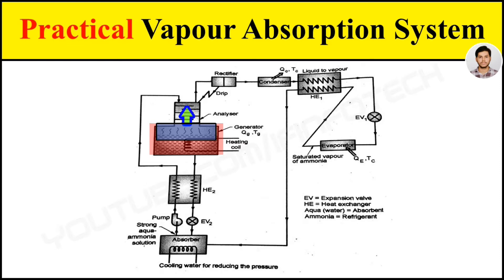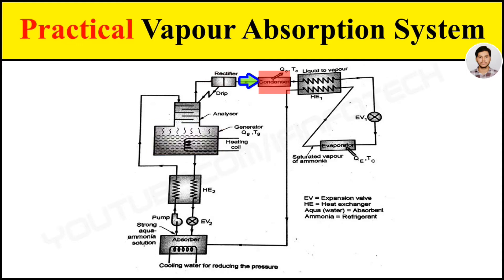This vapor passes through the analyzer where dehydration of the aqua ammonia takes place to produce strong ammonia vapor. If dehydration is not complete, the water particles are separated in the rectifier and the water is sent back to the generator. The strong ammonia vapor then passes through the condenser, while a weak aqua ammonia solution forms in the generator.